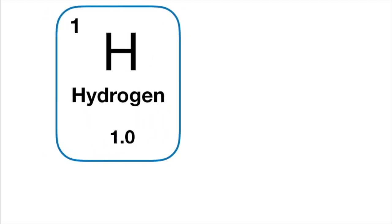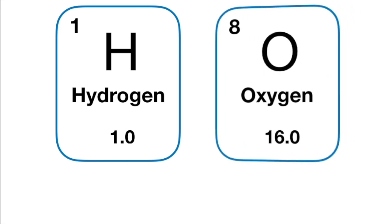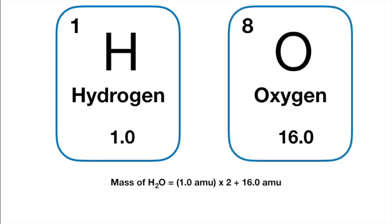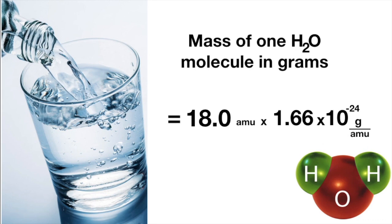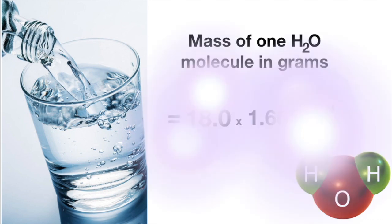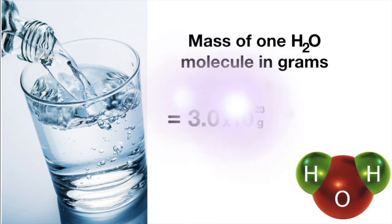So the atomic mass of hydrogen is 1.0 AMU, and the atomic mass of oxygen is 16.0 AMU. And that means that the atomic mass of H2O is 18.0 AMU. So to convert that into grams, which is the unit used by your digital scale, you multiply that by the conversion factor I just gave you to obtain this fantastically small number.